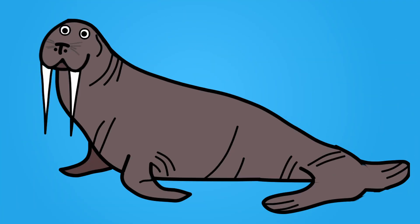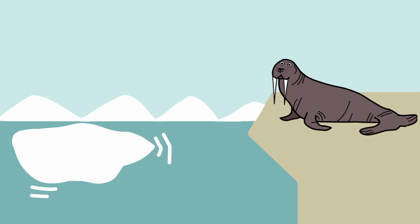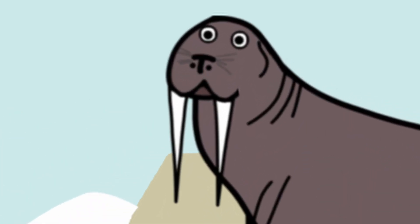Walruses are huge semi-aquatic mammals that live in the Arctic Circle of our planet. And when you look at one of them, the first thing you probably notice are these weird tusks. But what are they for?